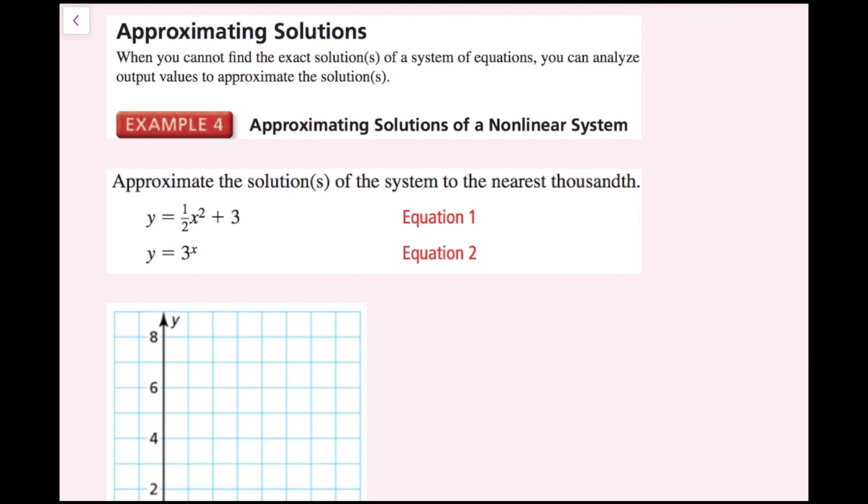If you don't have access to a graphing calculator, you can sketch a graph of the two functions, see where they intersect, and then use a scientific calculator to get your answer to the nearest thousandth. So I'm going to graph y equals one half x squared plus 3 first.